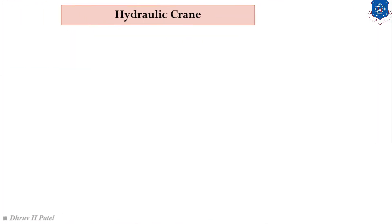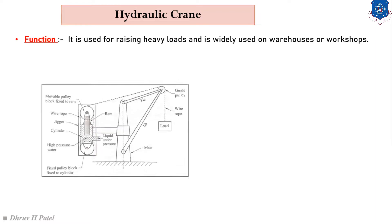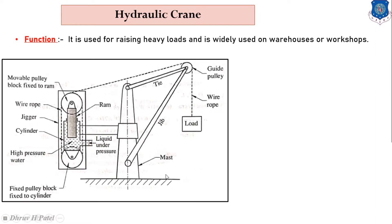Now let us understand the hydraulic crane. The hydraulic crane is a very common machine. Its function is to raise heavy loads and it is widely used in warehouses, workshops, and factories. In the construction of the hydraulic crane, load W is hanging with the use of a wire rope and a guiding pulley. There are two rods — the upper rod is known as the tie and the lower rod is known as the jib. The support structure holding both rods is known as the mast.